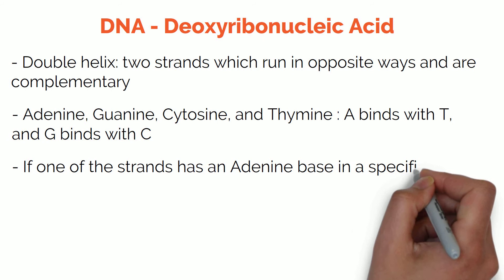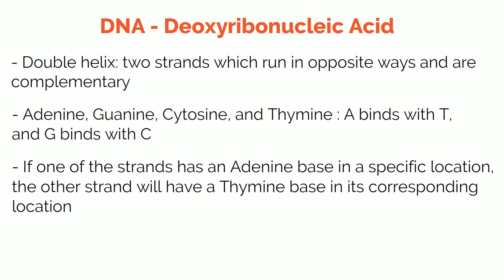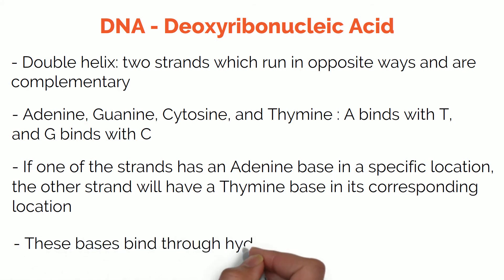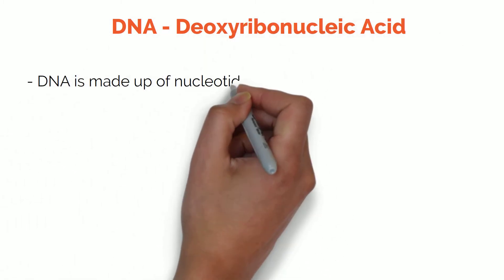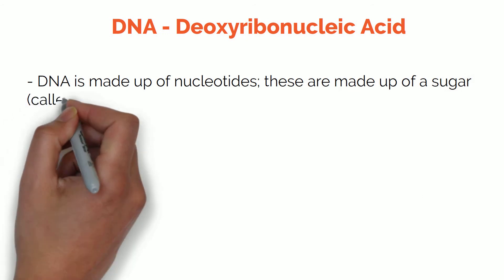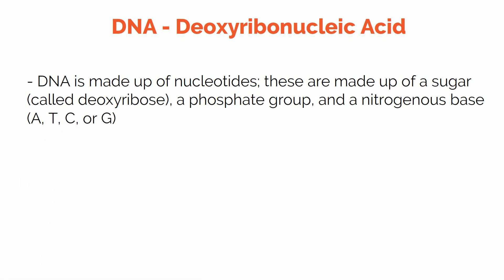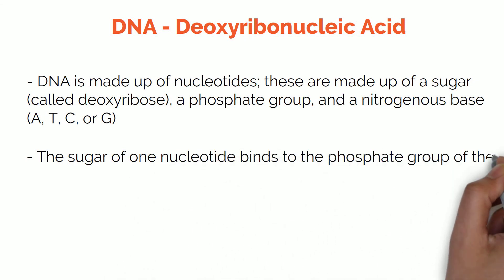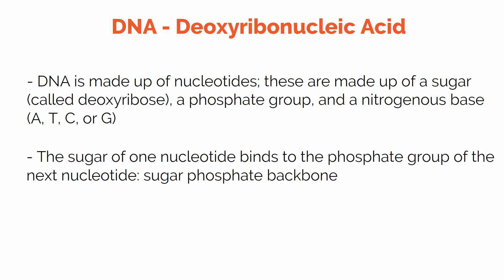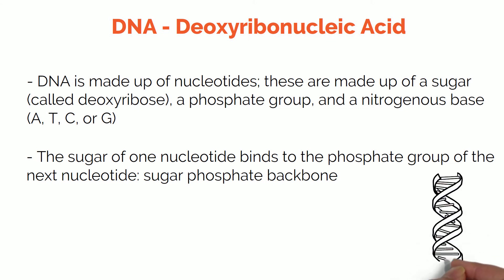So when we say that two strands are complementary, it means that if one of the strands has an adenine base in a specific location, the other strand will have a thymine base in its corresponding location. These bases bind through hydrogen bonds. The DNA is made up of nucleotides, which in turn are made up of a sugar called deoxyribose, a phosphate group, and the nitrogenous base — adenine, thymine, cytosine or guanine. The sugar of one nucleotide binds to the phosphate group of the next nucleotide and so on. This is called the sugar-phosphate backbone, as it is due to the bond between the sugar and the phosphate that DNA manages to maintain its structure.